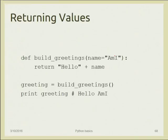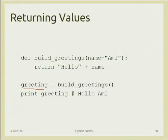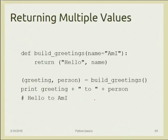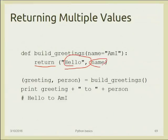A function can not only print something but also return a value using the 'return' keyword. For example, instead of printing inside the function, 'return "hello " + name' returns a string, which can then be stored in a variable and printed. A function can also return multiple values as a tuple — for example, returning both 'hello' and the name. When calling the function you can unpack the tuple into two variables: 'greeting, person = my_function()'. Printing 'greeting, "to", person' outputs 'hello to MEI'.